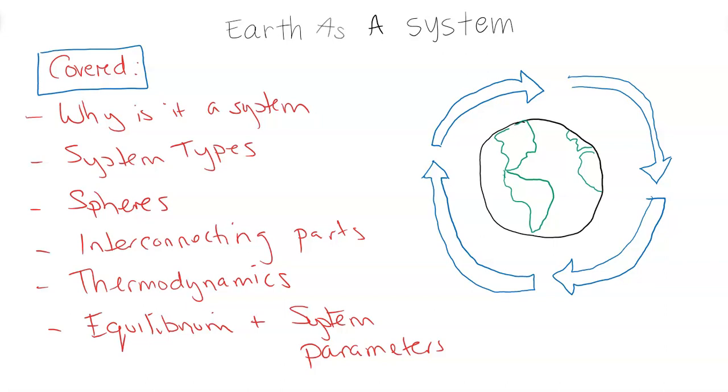Earth as a System is going to cover why the Earth is an actual system. Why do we, scientists, break down the Earth into different parts, components, sections, and look at it as a big system, a big working machine, and then the types of systems that we do have in nature and which ones apply to the Earth.